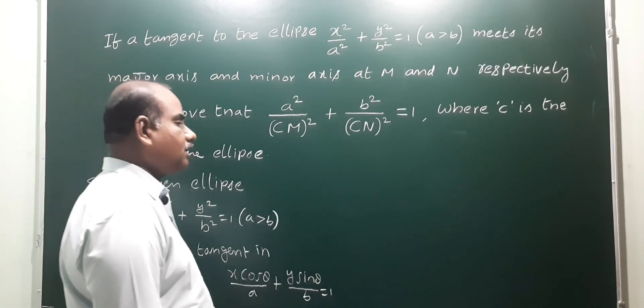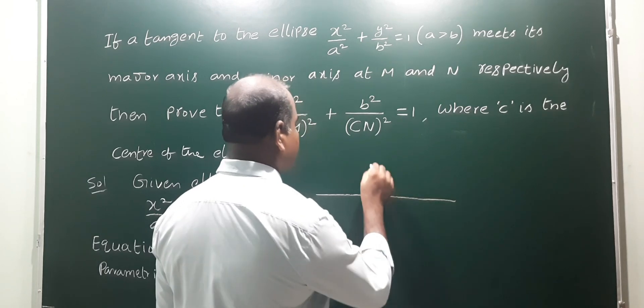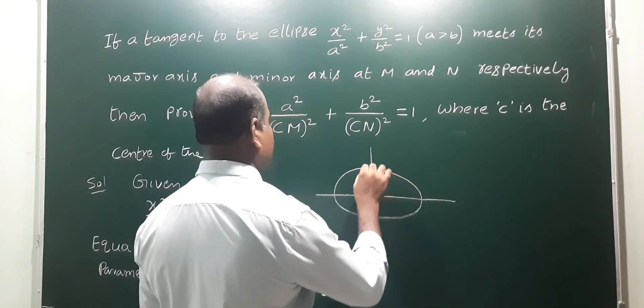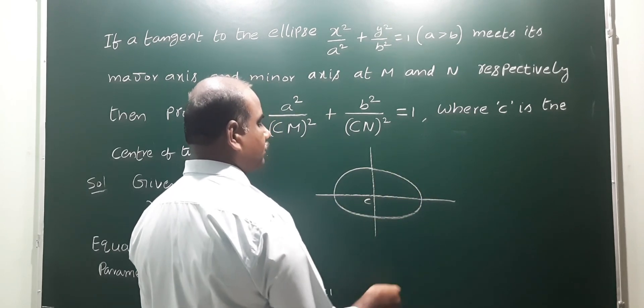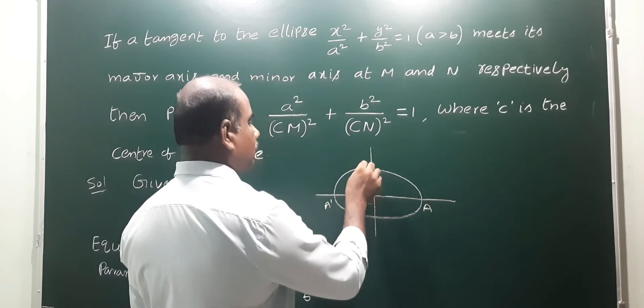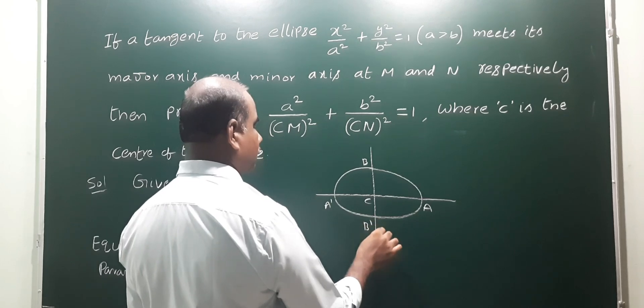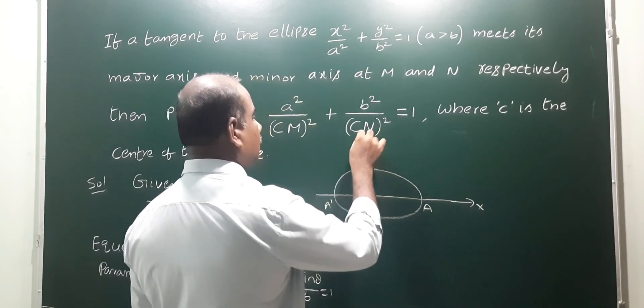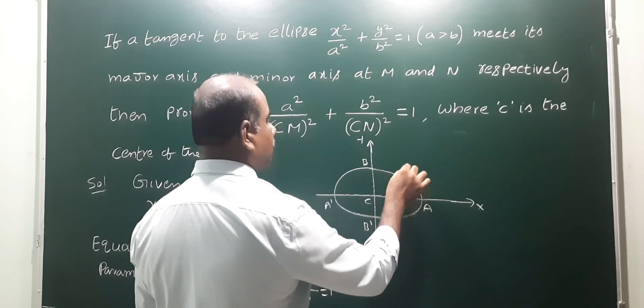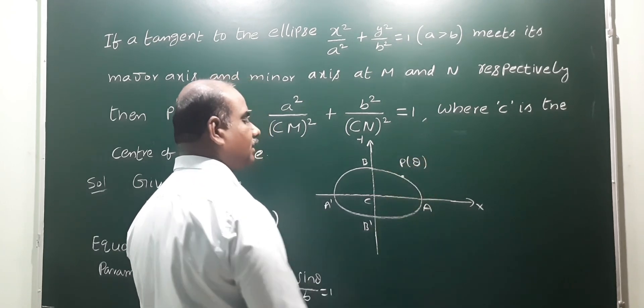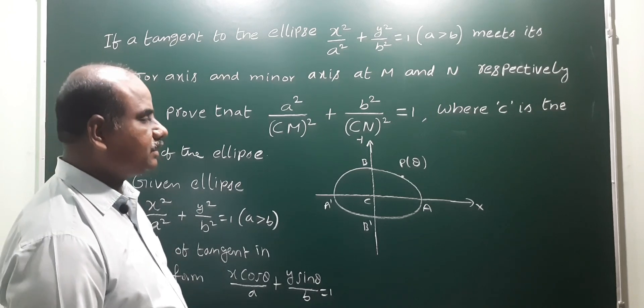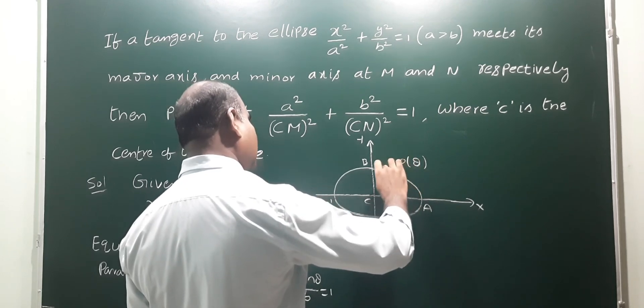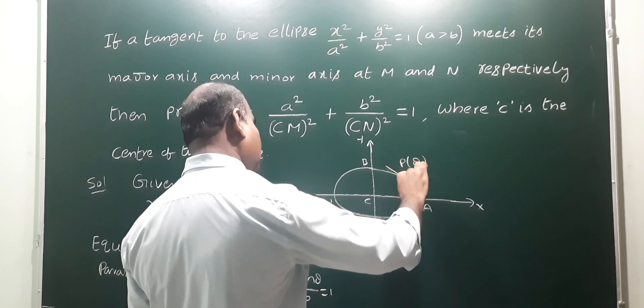This is the center of ellipse. A is here, B is here. X axis, Y axis. So this is a point P in parametric form: a cos theta comma b sin theta. At this point, draw the tangent. So this is the tangent to the ellipse.